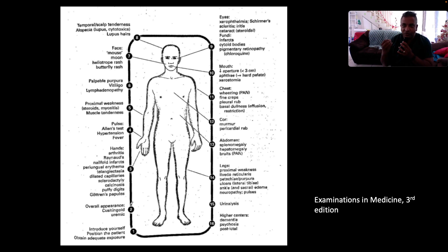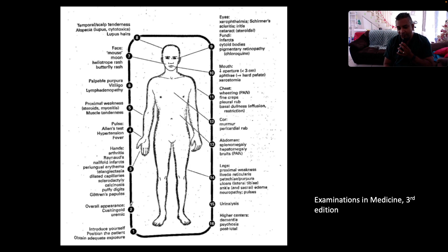Does the patient look Cushingoid? The most common cause of Cushing syndrome is exogenous administration of corticosteroids, and corticosteroids are our management of lupus. Does the patient look uremic? That could be due to lupus nephritis.